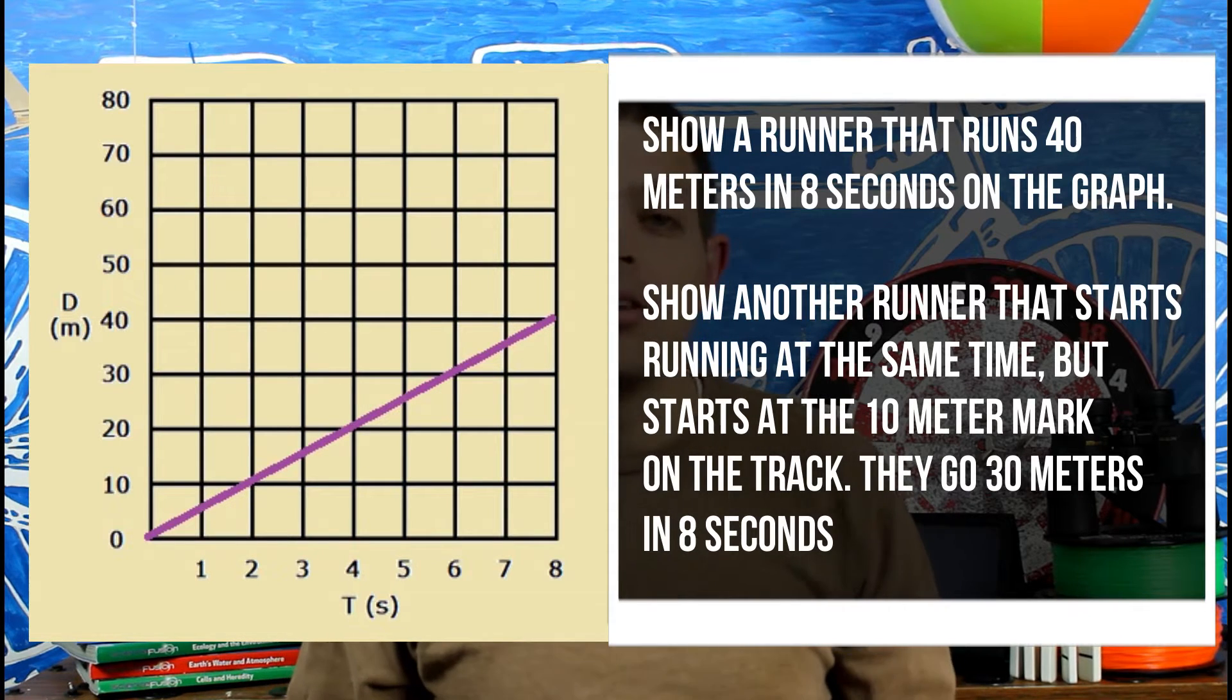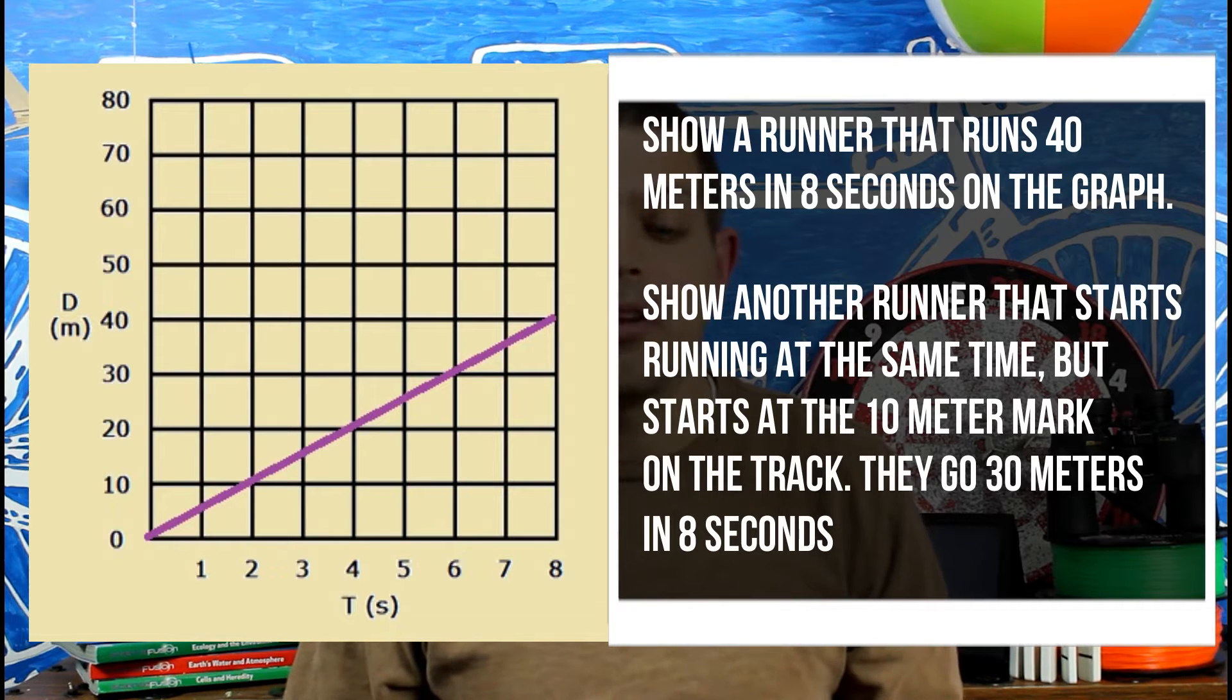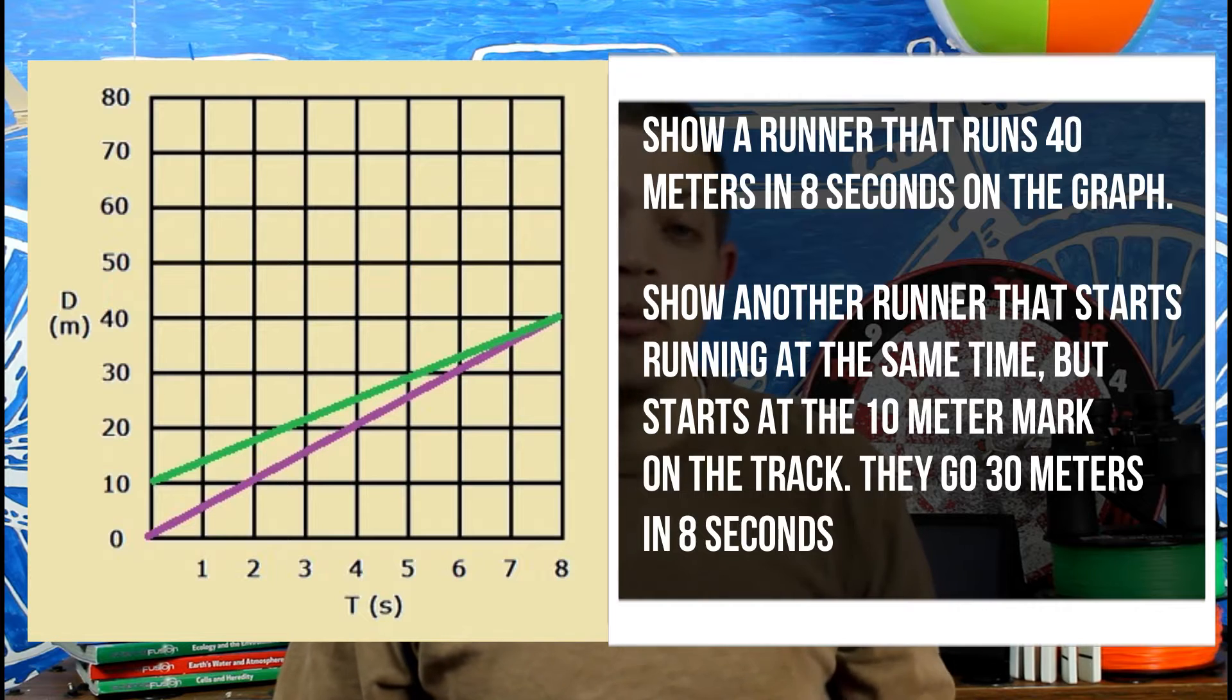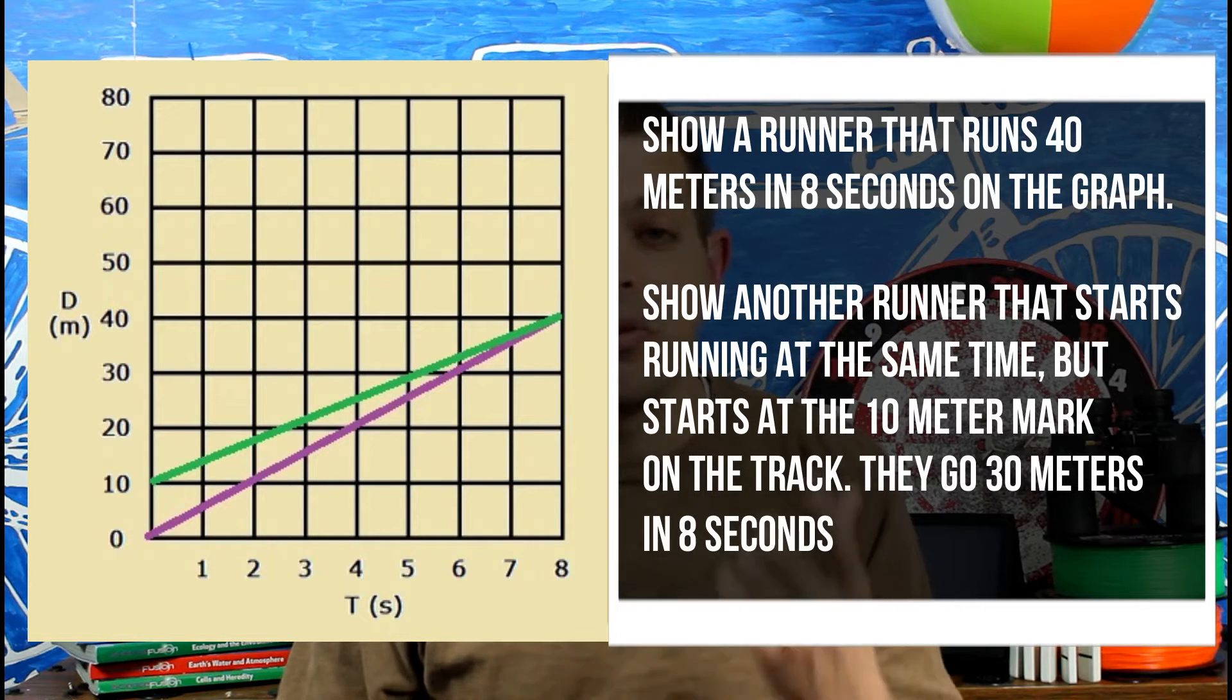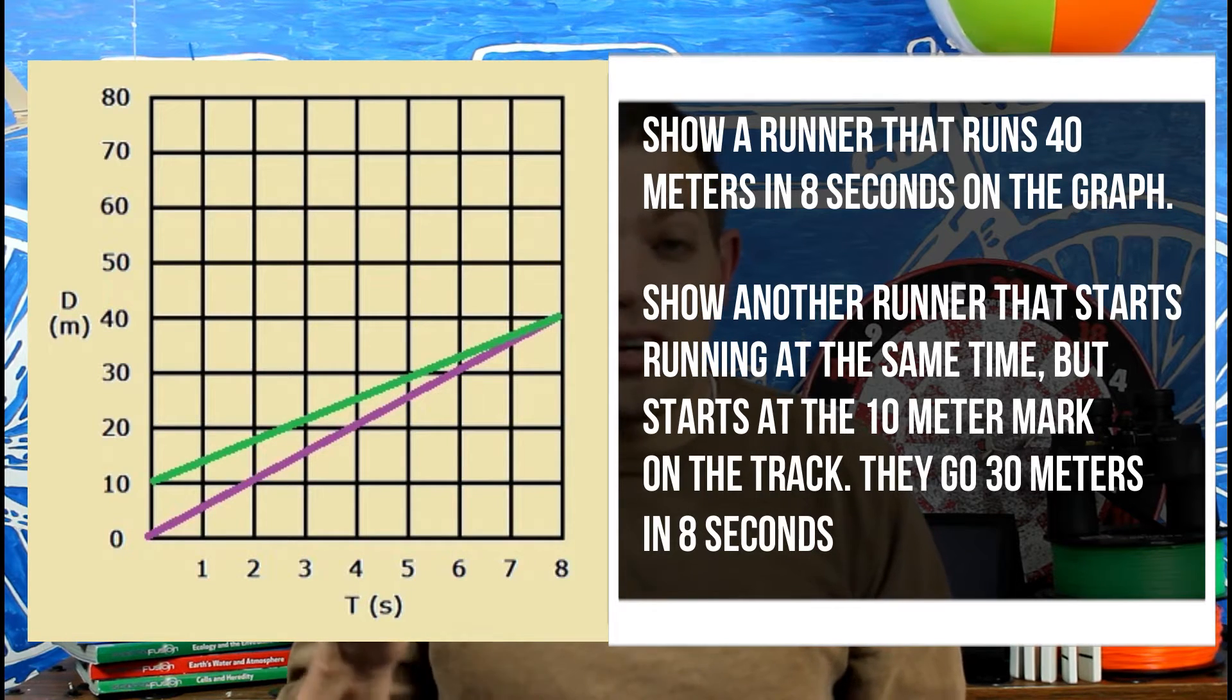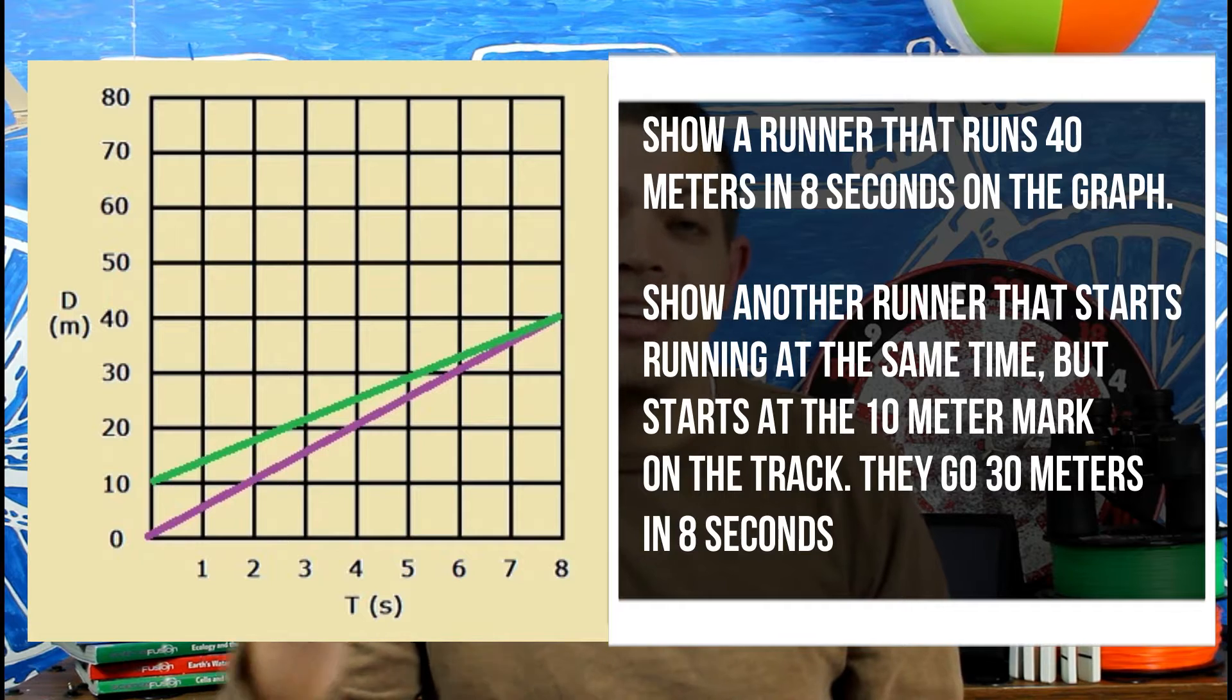Our second runner doesn't start at zero meters though. Still zero seconds. But if you take a look, our second runner starts at the 10 meter mark. So he has a 10 meter advantage at the very beginning when the timer hits start. We move up, our rise, we start at 10 and he runs 30 meters. So he's going to rise from 10 to 40 because that's 30 more and he does that in eight seconds as well.